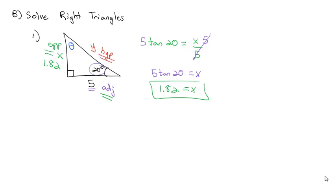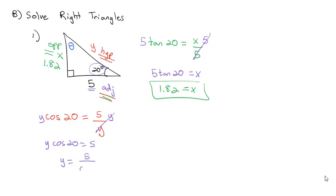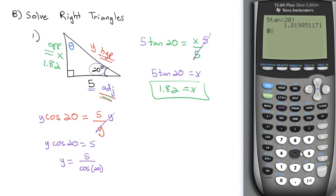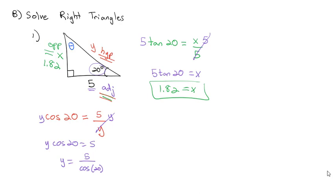To find y, the hypotenuse, I go back to the given side — the adjacent — and think about which trig ratio uses adjacent and hypotenuse. That's cosine. So cosine of 20 degrees equals adjacent 5 divided by hypotenuse y. Multiplying both sides by y gives y cosine 20 equals 5. Dividing both sides by cosine of 20, y equals 5 divided by cosine of 20. On the calculator, that gives y equals 5.32.